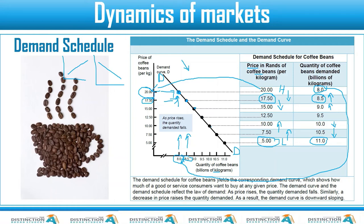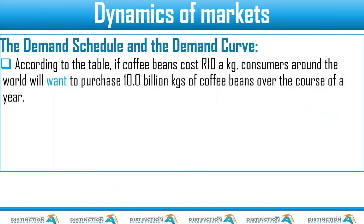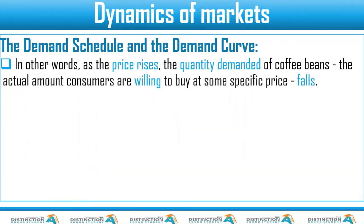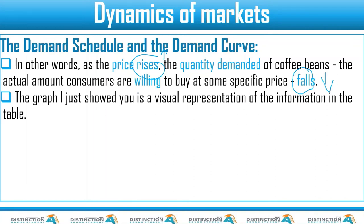As you learn more about the demand curve, you are going to see that we have something called movement along the demand curve and something called shifting of the demand curve — those are not for today's lesson; you'll learn them in lessons to come. So in other words, as the price rises, the quantity demanded of coffee beans — the actual amount consumers are willing to buy at a specific price — will fall.